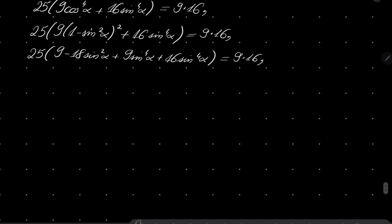And now comes the ugly part. We have to solve this equation. So we have 25 times 9 minus 16 times 9 - I put this part on the left hand side already - minus 18 times 25 times sine squared of alpha, plus 25 times 25 times sine to the fourth power of alpha equals 0.